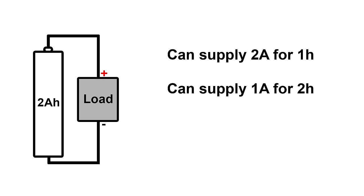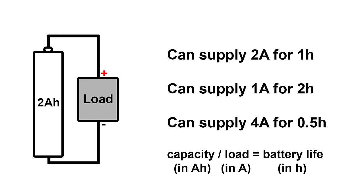If we draw less current, the battery lasts longer. It could deliver 1 amp for 2 hours. And if we draw more current, the battery gets drained faster. It can deliver 4 amps for half an hour. So amp hours are a simple way of estimating battery life. And in general, capacity in amp hours divided by the load in amps gives you the battery life in hours.